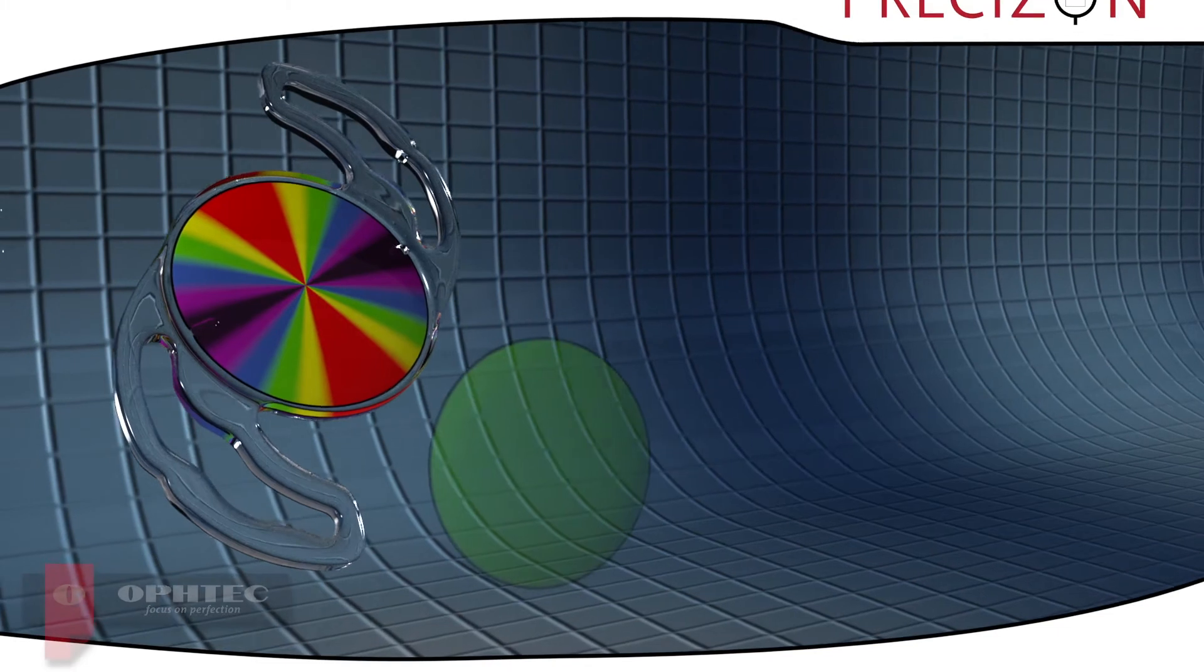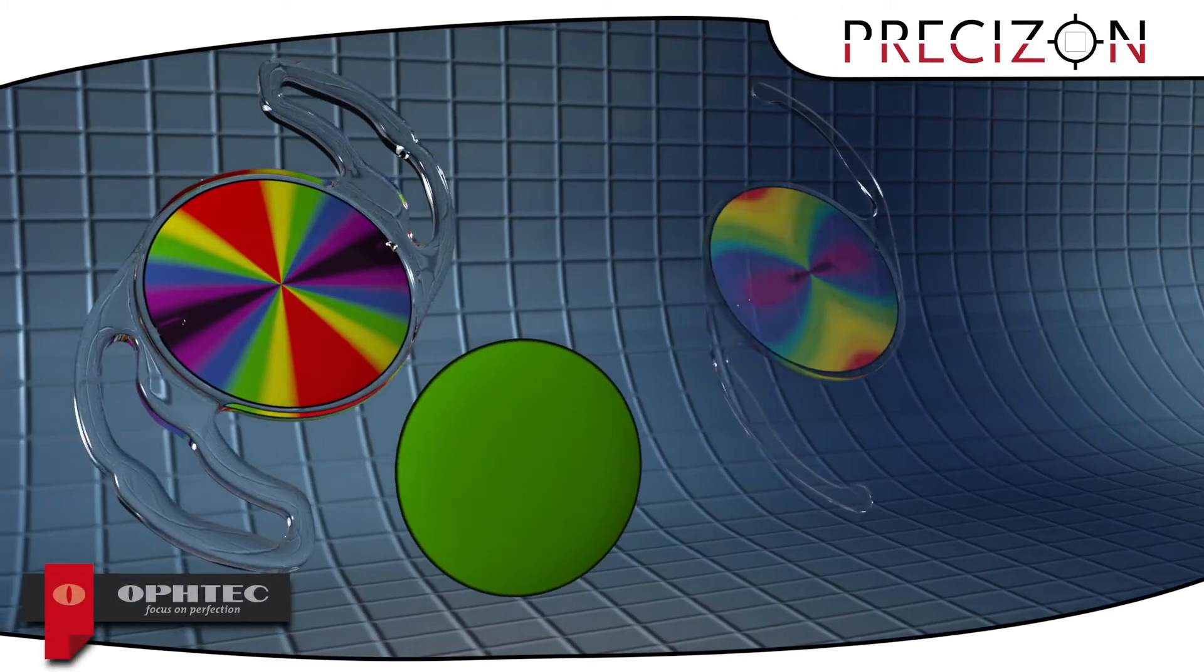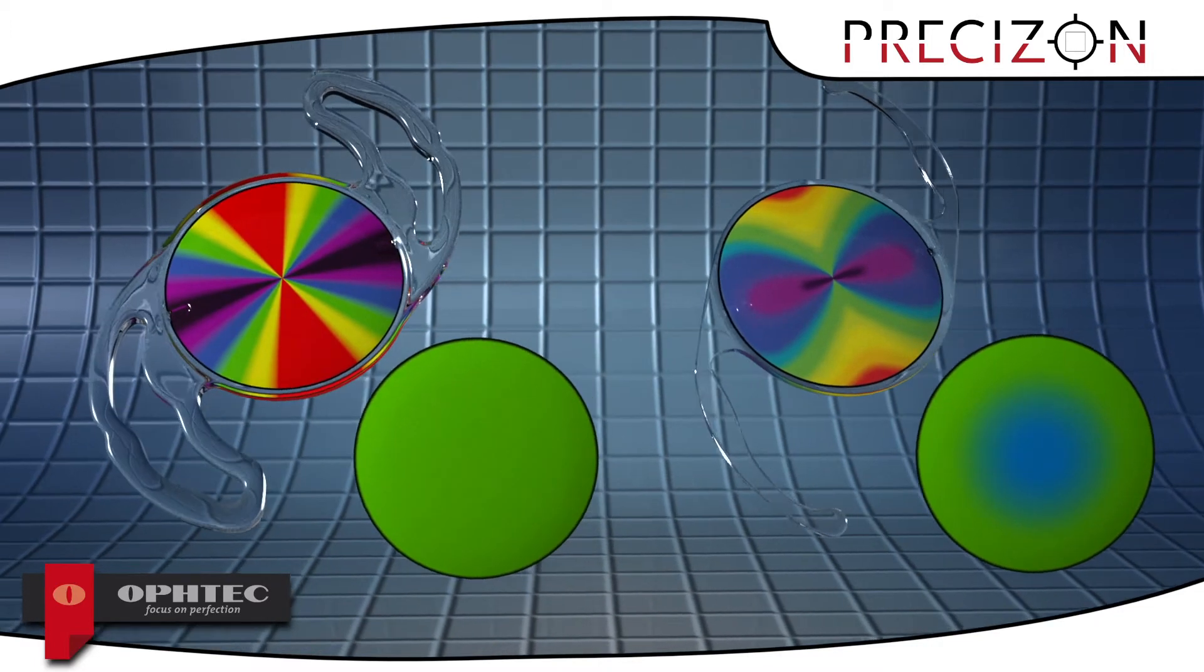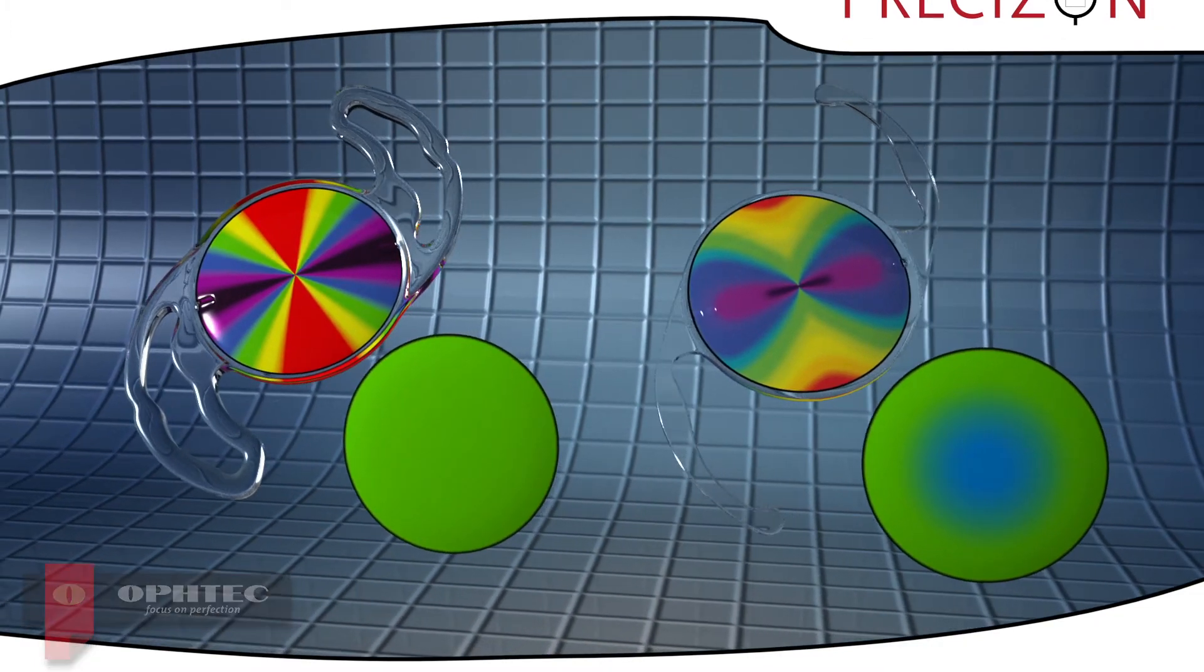The unique design of Precizon Toric also enables it to have uniform spherical equivalent across the optic diameter, which is not the case with standard Toric IOLs.